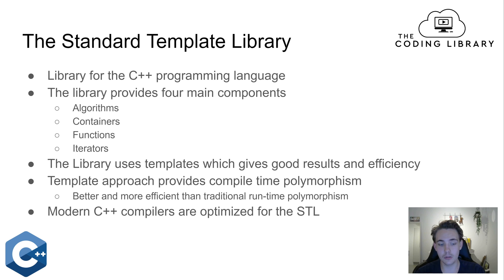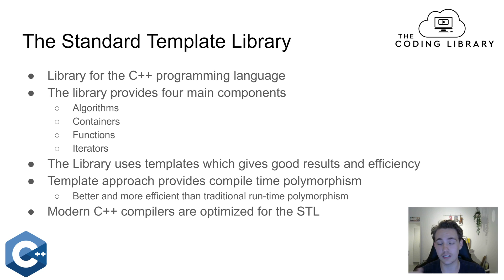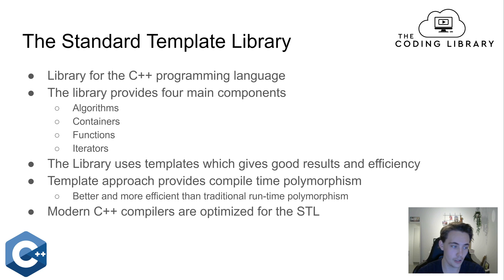Modern C++ compilers are also optimized for the STL library, so it's really a good thing to use. Look up whether there are methods, functions, or algorithms already built in instead of writing your own, because they are already debugged and represent the most efficient implementation — optimized for C++ compilers. This saves you a lot of time and makes your code better and more efficient.